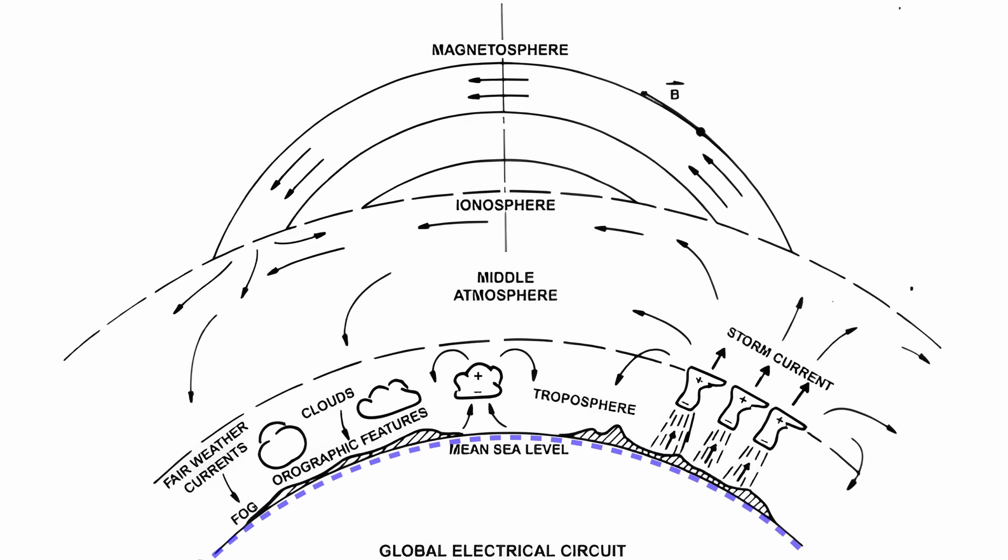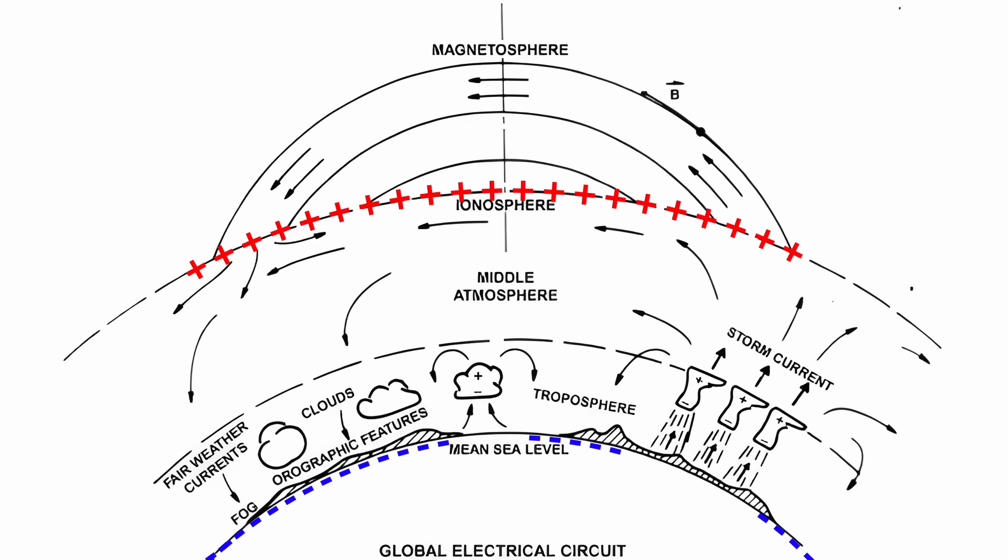On a broader scale, Earth carries a net negative charge, with a contrasting positive charge residing in the ionosphere. Together the Earth's surface and the ionosphere resemble a charged spherical capacitor. So two oppositely charged conducting electrodes with an insulator in between.